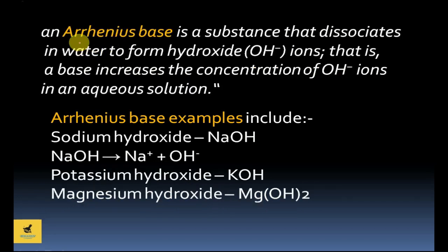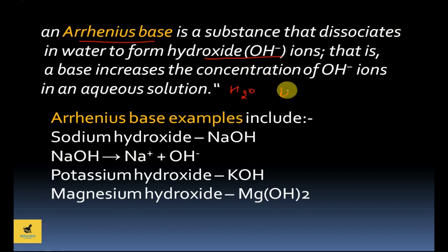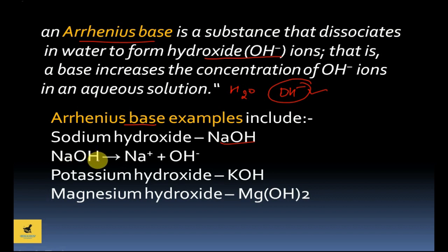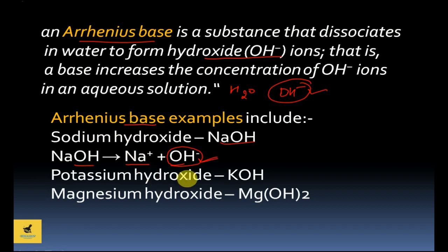Next is the Arrhenius base. An Arrhenius base is a substance which dissociates in water to form hydroxide ions (OH⁻). For example, NaOH — when you see its reaction in water, it breaks into Na⁺ and OH⁻. Due to this OH⁻, NaOH is called an Arrhenius base.